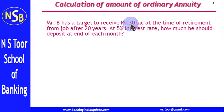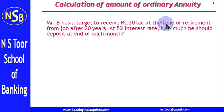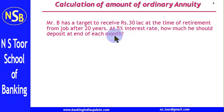Here we are given the future value. Mr. B has a target to receive Rs 30 lakh at the time of his retirement from job after 20 years. At 5% interest rate, how much should he deposit at the end of each month? In a previous question we were to calculate the amount of annuity based on present value, and here we have to make the calculation based on future value.